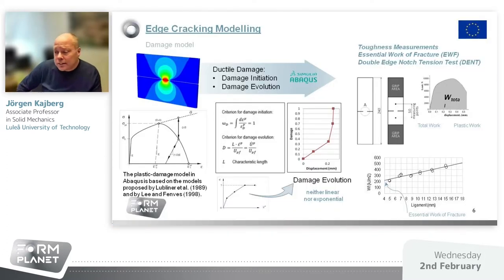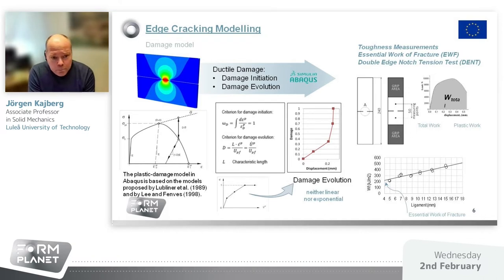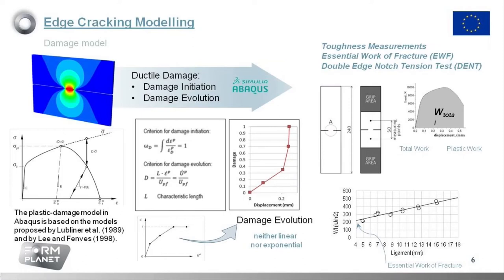This part of the presentation about edge cracking modeling is a contribution from Ricardo Hernandez, who is a researcher at RECUT. In order to handle crack formation during forming, we need some failure and damage models. In this case, we will use a damage model implemented in the finite element code Abaqus. The damage is actually controlled by a single parameter D, starting at zero, and when it reaches unity, failure occurs and the element will be eroded from the finite element model.